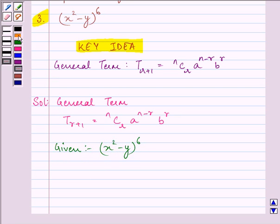First of all we can write it as x squared plus negative y whole raised to the power 6.